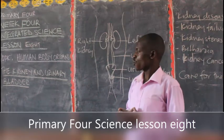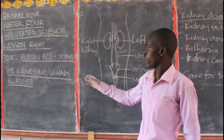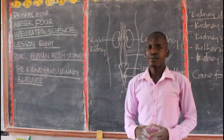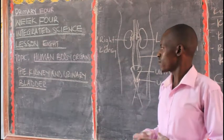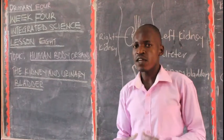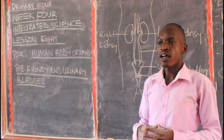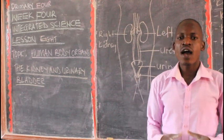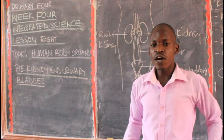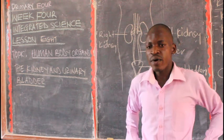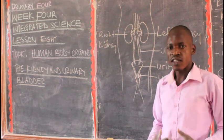We are still moving on with our human body organs and today we are looking at the kidney and urinary bladder. The two go together and they cannot be separated. When we are dealing with the kidney, we can't forget to talk about the urinary bladder. They are found in the lower abdominal cavity — at the back is where we find our kidneys, and the bladder is at the lower part here.